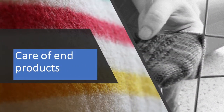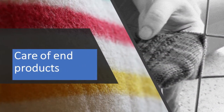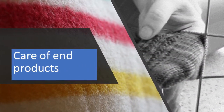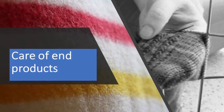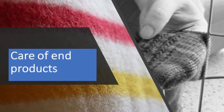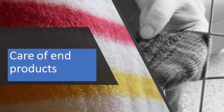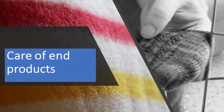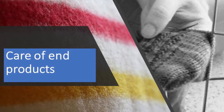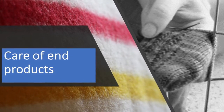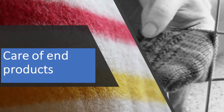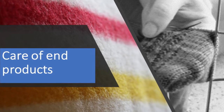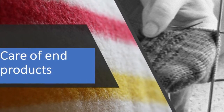Woolen clothing and blankets should be folded inside acid-free tissue paper and stored in airtight containers or vacuum bags. Wool coats should be thoroughly cleaned, dried, brushed, and aired out before storing them in breathable natural cotton coat bags to avoid moths getting into them during summer.